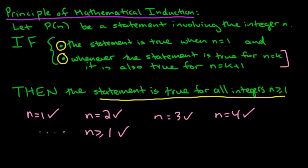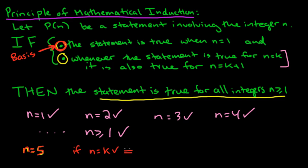I should point out that choosing n bigger than or equal to 1 is not really necessary — we could have started at any place. Maybe you want to start at n equals 5. This beginning part is called the basis; it's the first case. It's not necessary that you start at 1; you might just start at n equals 5. Then you show that if n equals k works, then n equals k plus 1 works, and you'll be able to make the conclusion.